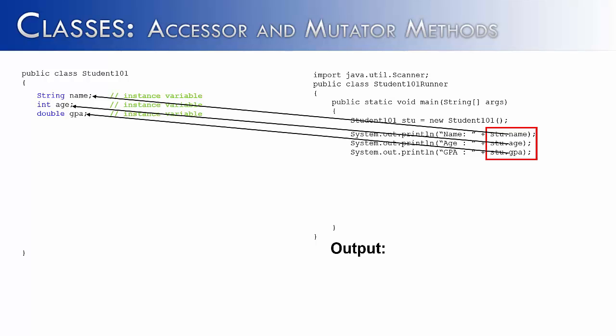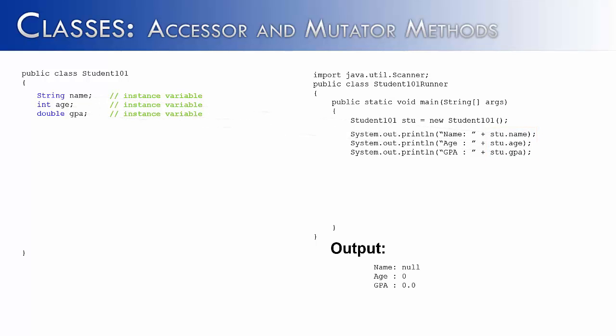I access those variables inside System.out.println statements to print them out. It would print out null, zero, and 0.0 because they're instance variables. Java gives them default values. For a string, it would be null. For an int, it would be zero. And for GPA, it would be 0.0.